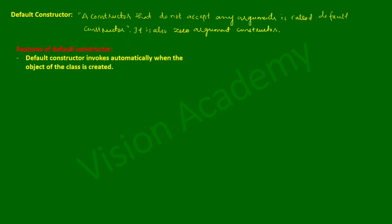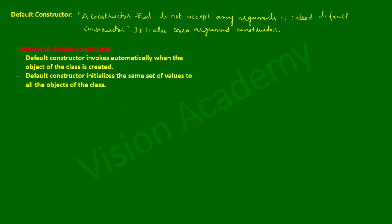Now let us study the features of default constructor. The first feature is that the default constructor invokes automatically when the object of the class is created — as soon as the object is created, the default constructor will get executed. The second feature is that the default constructor initializes the same set of values to all the objects of the class, because different values cannot be passed as it does not have any arguments.